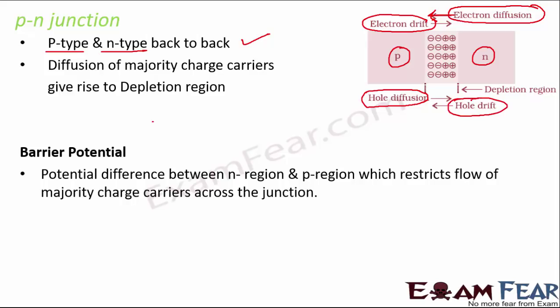Initially drift current is small because minority carriers are few, while diffusion current is large. However, with time the diffusion current decreases as the number of majority carriers reduces. Eventually a state of equilibrium is reached where diffusion current equals drift current.